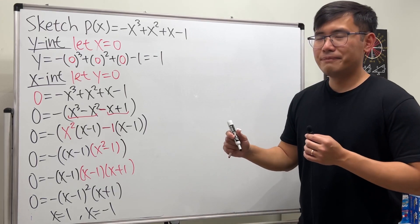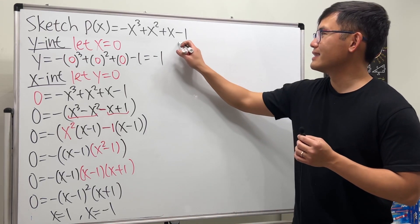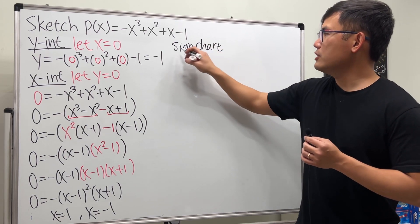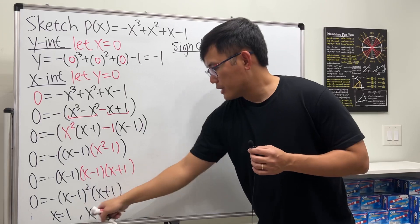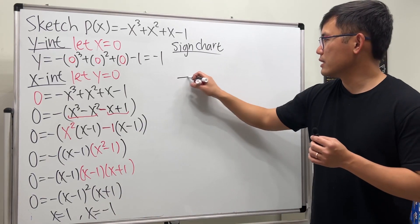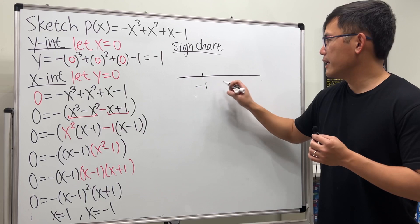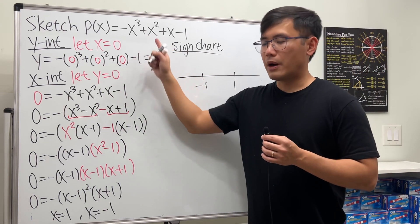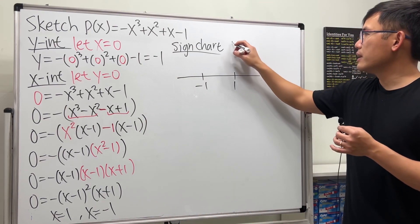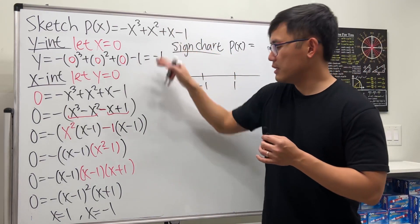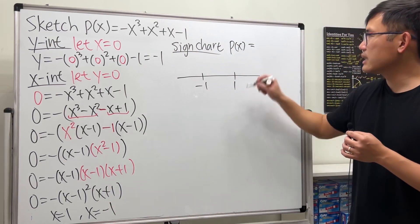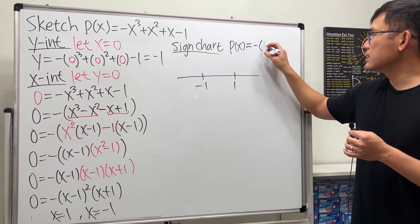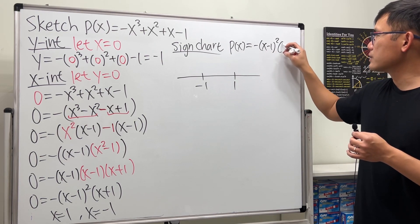Now let's do the sign chart. I'm going to mark -1 and 1 on the number line. The factored form of the polynomial is p(x) = negative(x - 1)²(x + 1). These are the critical values we'll test around.